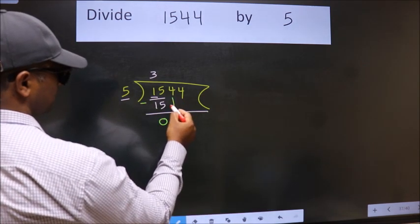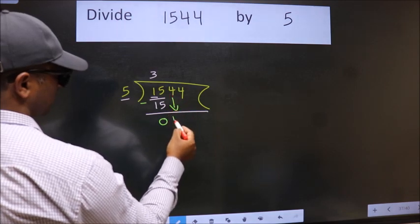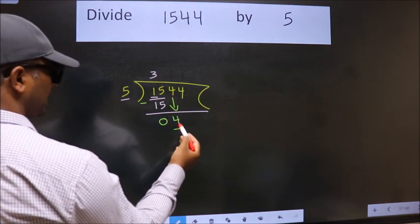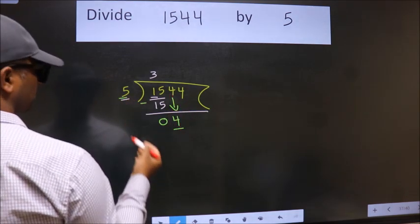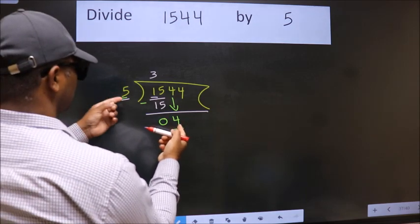After this, bring down the beside number. So, 4 down. Now, here we have 4, here 5.